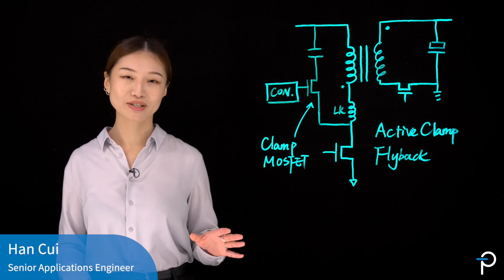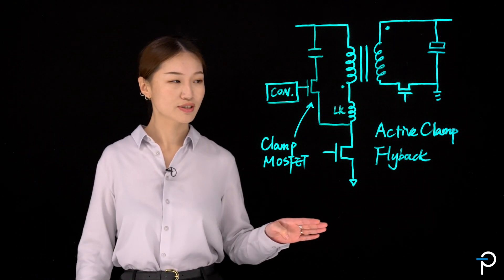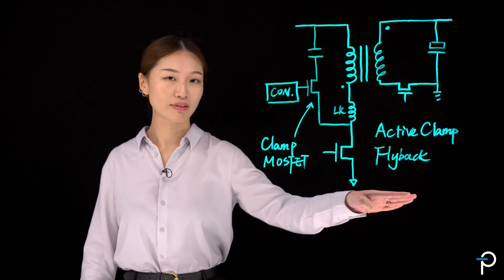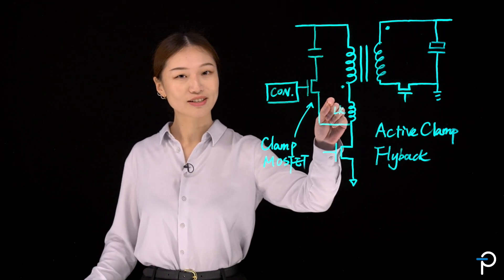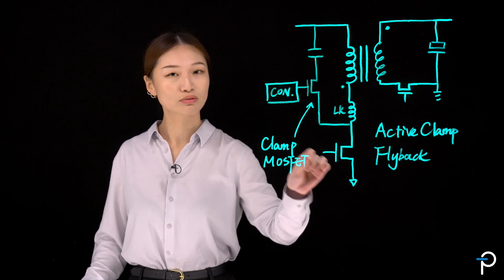Flyback is the most common topology for offline converters. Traditional ways to improve efficiency normally involve an active clamp flyback that recirculates the leakage energy and at the same time allows the primary switch to achieve zero voltage switching.